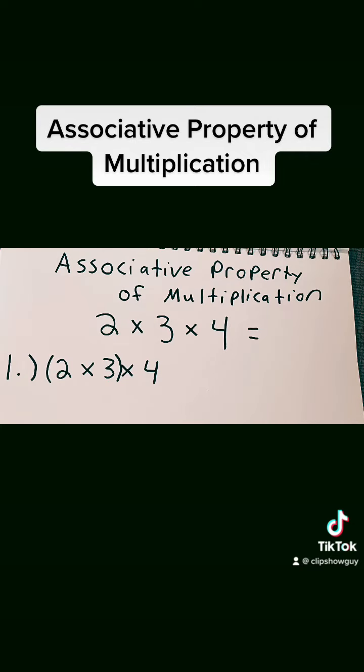When you're multiplying three or more factors, you have to choose which numbers you're going to multiply first. I denote this by putting parentheses around them.